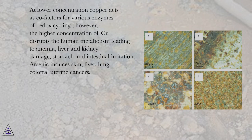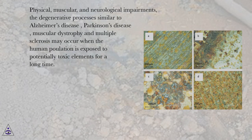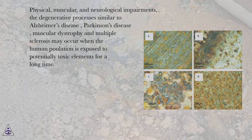Arsenic induces skin, liver, lung, and uterine cancers. Physical, muscular, and neurological impairments, and degenerative processes similar to Alzheimer's disease, Parkinson's disease, muscular dystrophy, and multiple sclerosis may occur when the human population is exposed to potentially toxic elements for a long time.